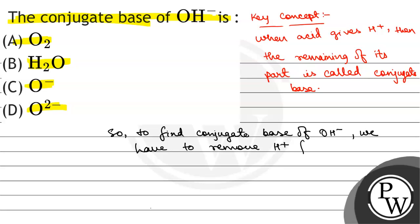From OH⁻, when we remove H⁺, that will form O²⁻ plus H⁺. So, this is the conjugate base of OH⁻.